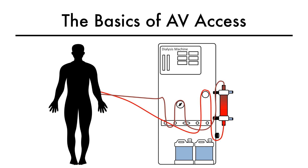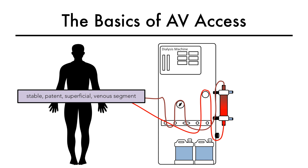Let's start this section by talking about the very basics of an arteriovenous axis, also called AV axis, used for hemodialysis. The purpose of an AV axis is to have a stable, patent, superficial venous segment where two dialysis needles can be inserted far enough apart to allow blood removal and return from and to the patient during hemodialysis.